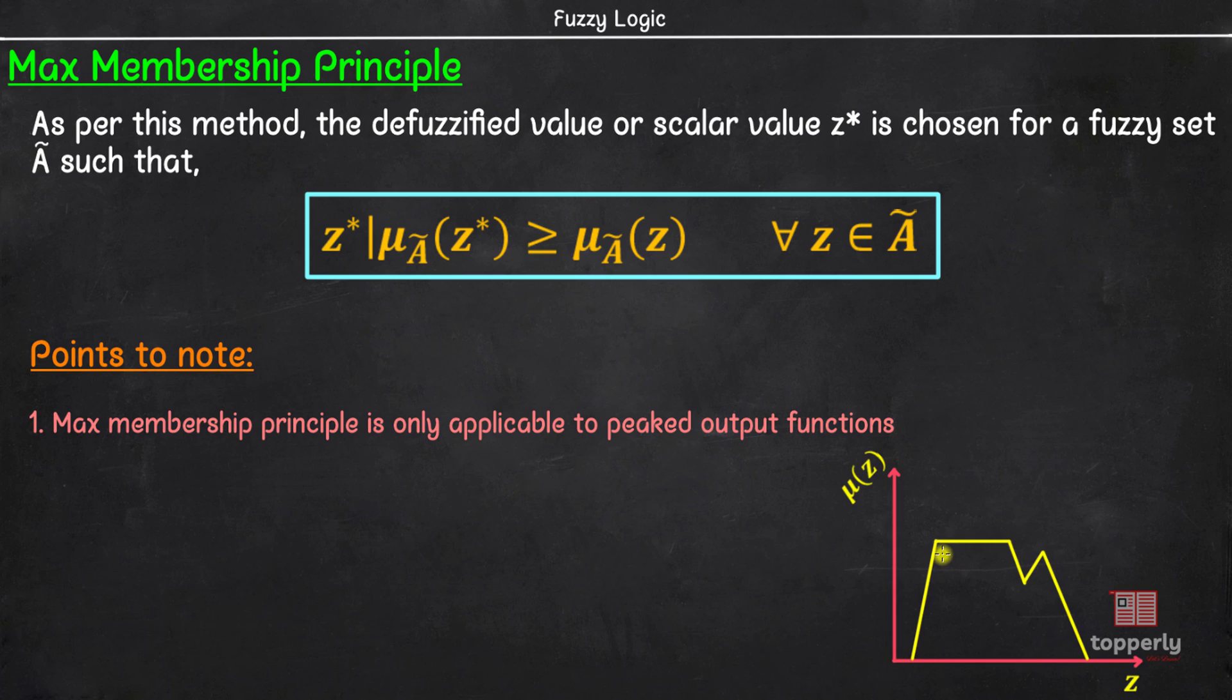If we use a non-peaked output function like this, there are many values of z with the same peak value μ of z. This means that there will be multiple z* values. This is not possible.